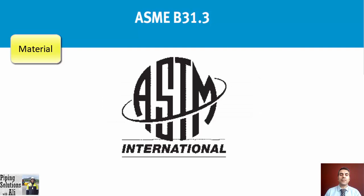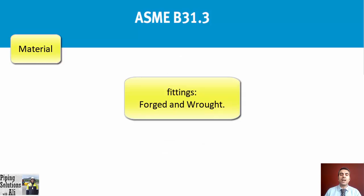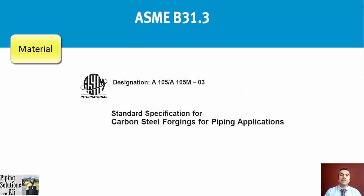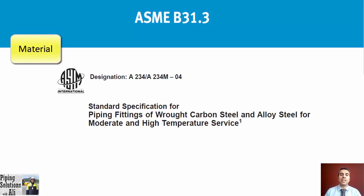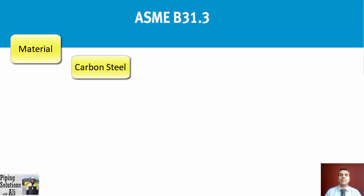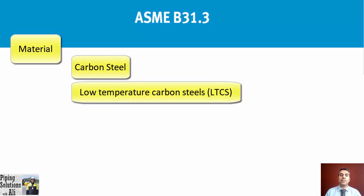ASTM — American Society for Testing and Materials — has specified the standard for the manufacturing processes. Referring to the previous session, fittings are manufactured in two methods: forged and wrought. ASTM A105 is the standard specification for carbon steel forgings for piping applications, and ASTM A234 is the standard specification for piping fittings of wrought carbon steels and alloy steels for moderate and high temperature services.